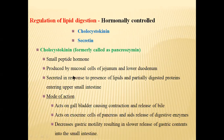The control of lipid digestion is hormonal. Two hormones are helpful in controlling lipid digestion: cholecystokinin and secretin. Cholecystokinin — earlier also called pancreozymin — is a small peptide hormone produced by mucosal cells of the jejunum and lower duodenum. It is secreted in response to the presence of lipids and partially digested protein entering the upper small intestine.